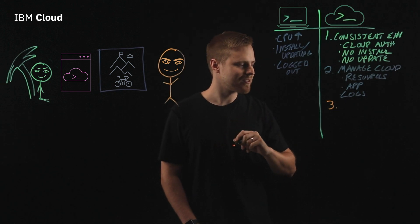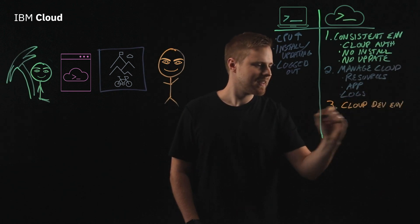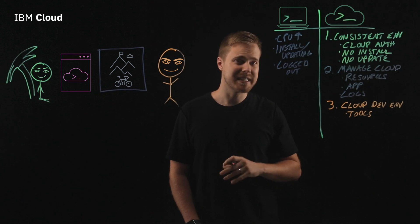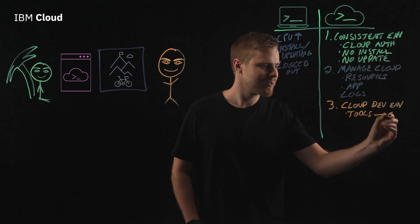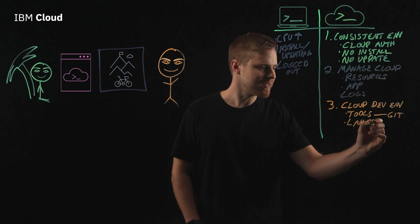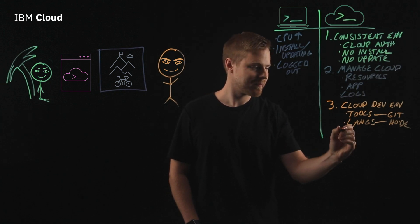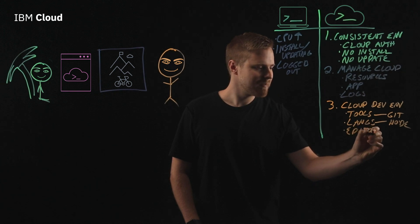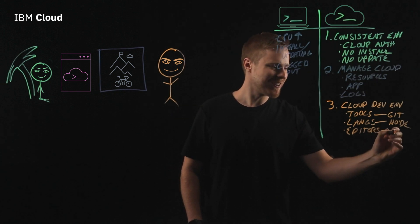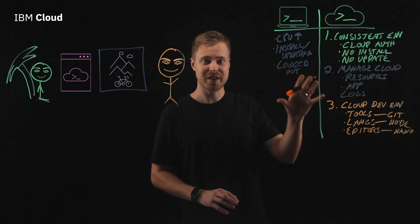A final benefit of Cloud Shell is that it's a cloud-based dev environment. Cloud Shells include all of the tools that you need to be productive as a developer — tools like Git for source control management. Cloud Shells typically include several languages as well. For example, if you are a Node developer, you can use Node right within a Cloud Shell. And finally, Cloud Shells typically include an editor like Vim or Nano, so you can actually edit files, scripts, and code right within your Cloud Shell environment.